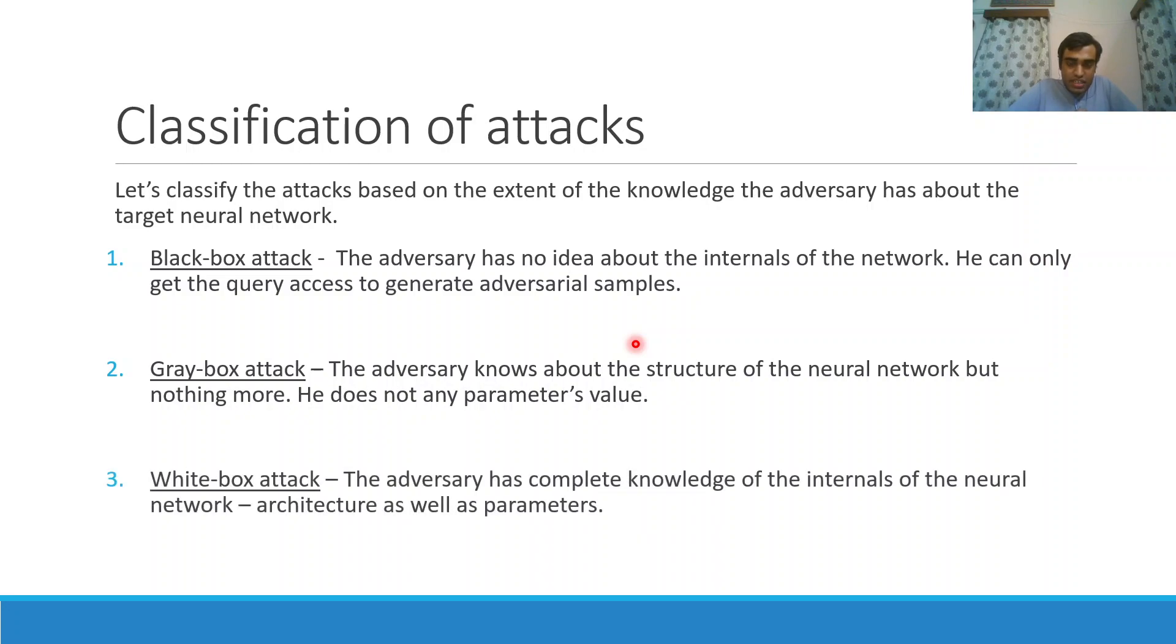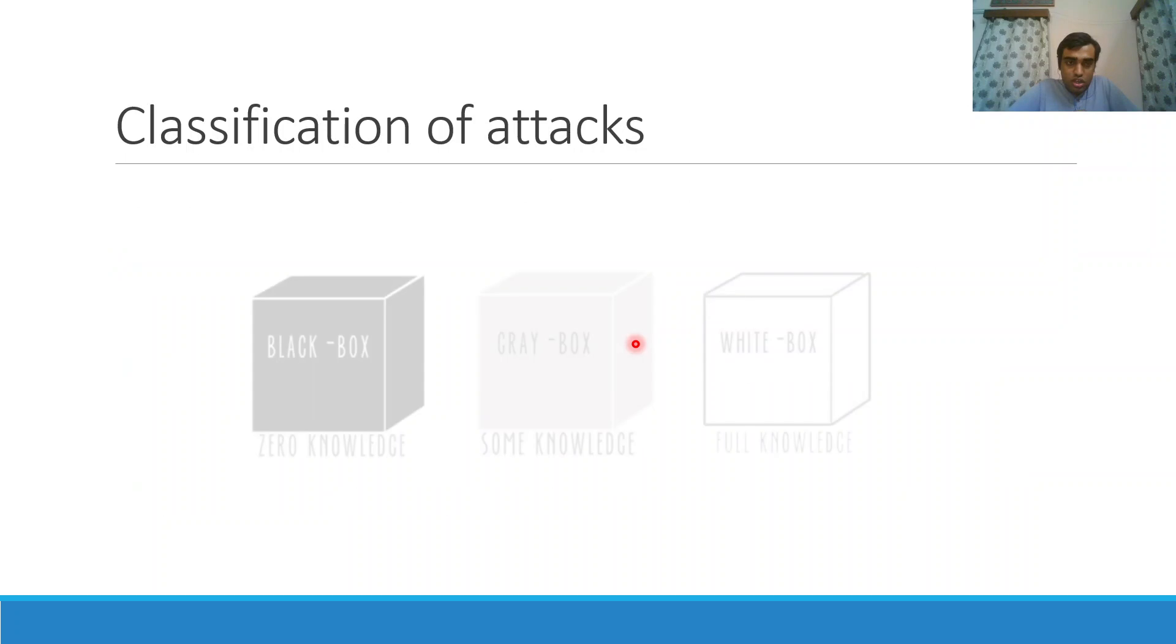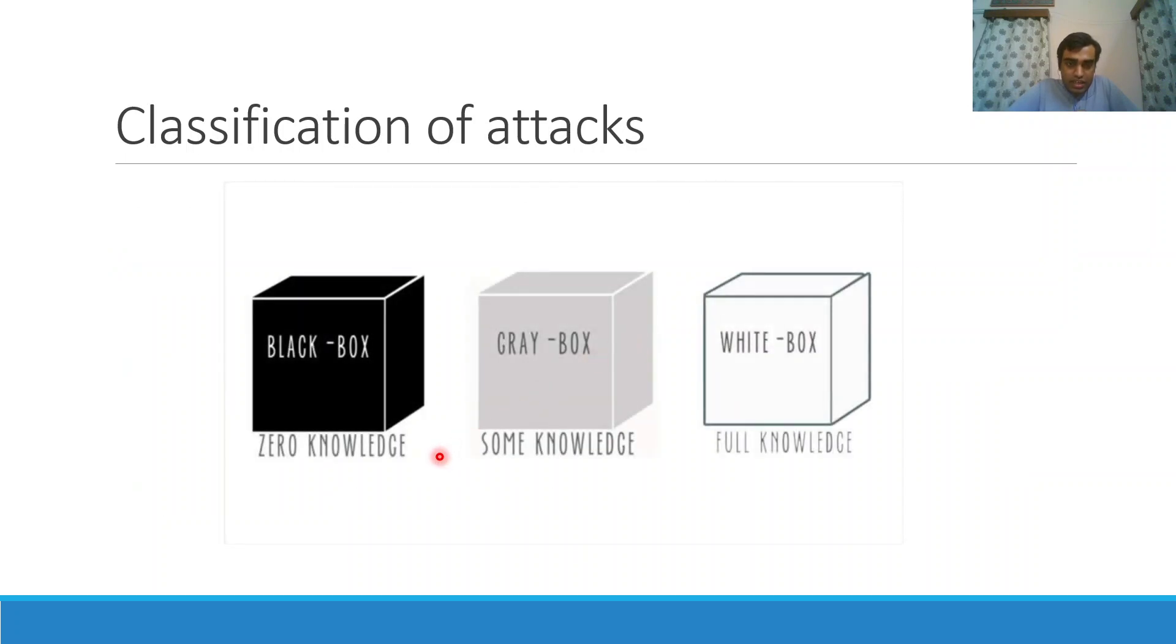In white box attack, the adversary has complete knowledge of the neural network. He knows about its architecture and all the parameters, activation functions, etc. To summarize, in black box there is zero knowledge, in gray box there is some knowledge, and in white box there is full knowledge. In black box and gray box cases, the adversary usually tries to prepare a surrogate network by observing input-output observations from the original network. Once the surrogate network is ready, he can use that to get adversarial samples. In white box, he has all the details and can literally clone it.